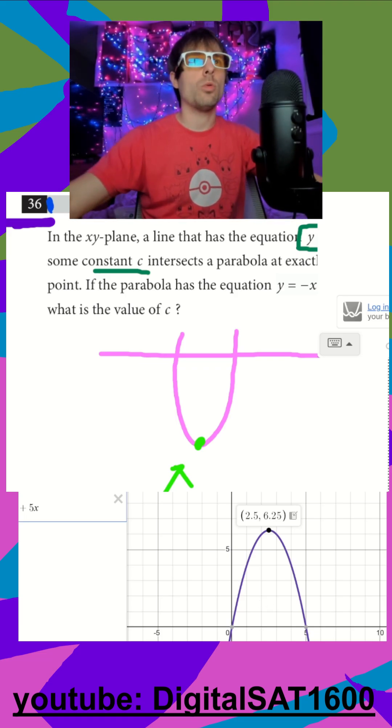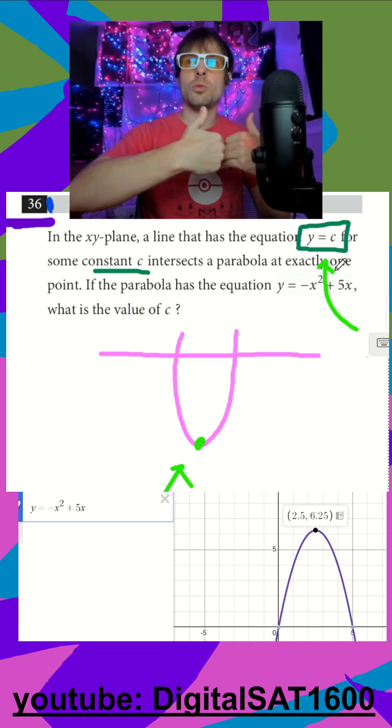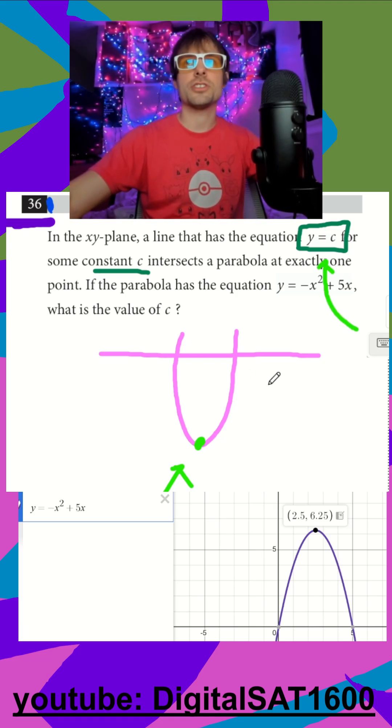I just want to double check which point do they want. And it looks like if I shift this over, they want the y value, right? The c value is a y value. So for my parabola, that's just going to be 6.25. And that's all you have to do for that one.